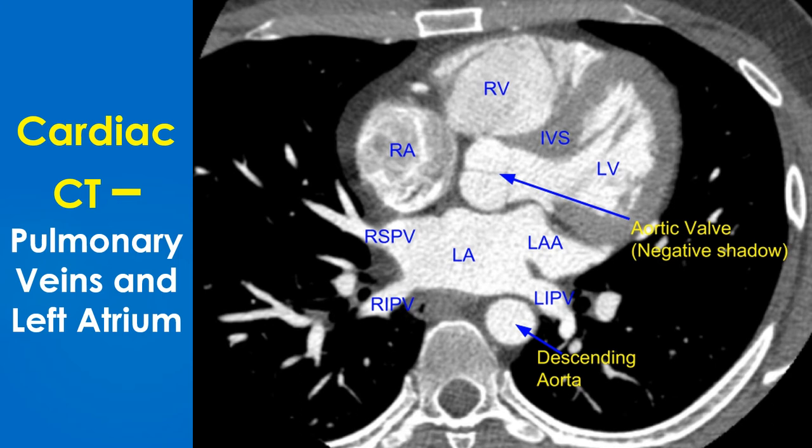In this image it can be appreciated that the right ventricle is an anterior chamber placed substernally, while the left ventricle has a more posterior location. Contrast density is greater in the left-sided chambers, as this is a delayed image acquired after intravenous contrast injection.